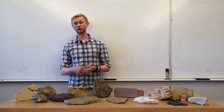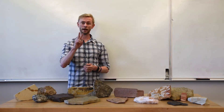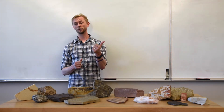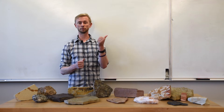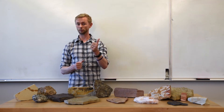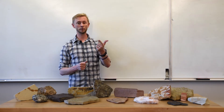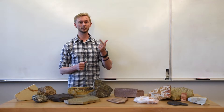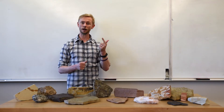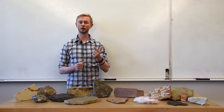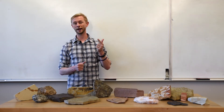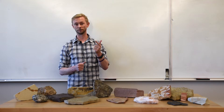Weathering can be broken down into two main categories. Physical weathering, where rocks are broken into smaller pieces by physical processes, and chemical weathering, where chemical reactions either alter the composition of a rock or slowly dissolve away at an exposed surface.